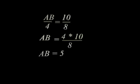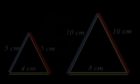The length of the AB side of the smaller triangle is 5 centimeters, just as we had determined previously.